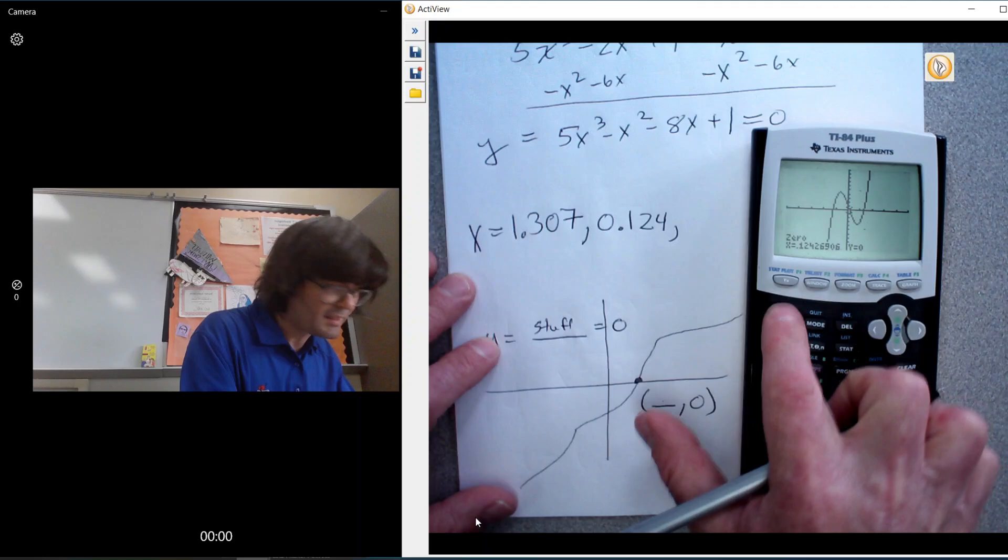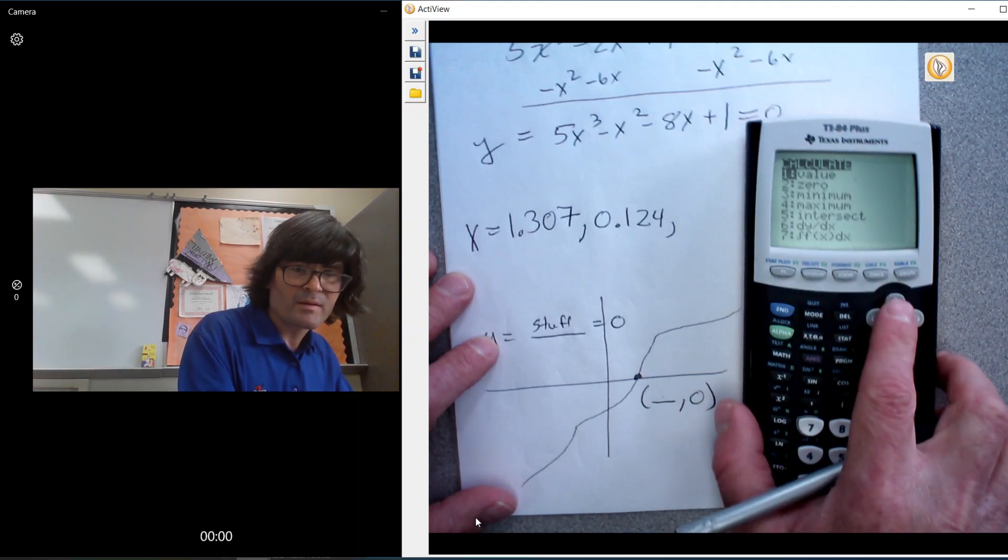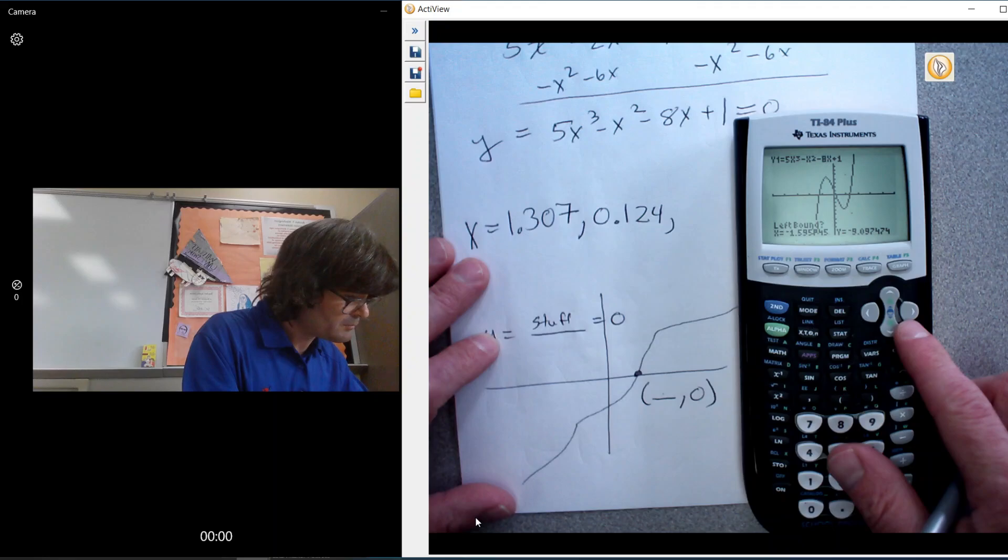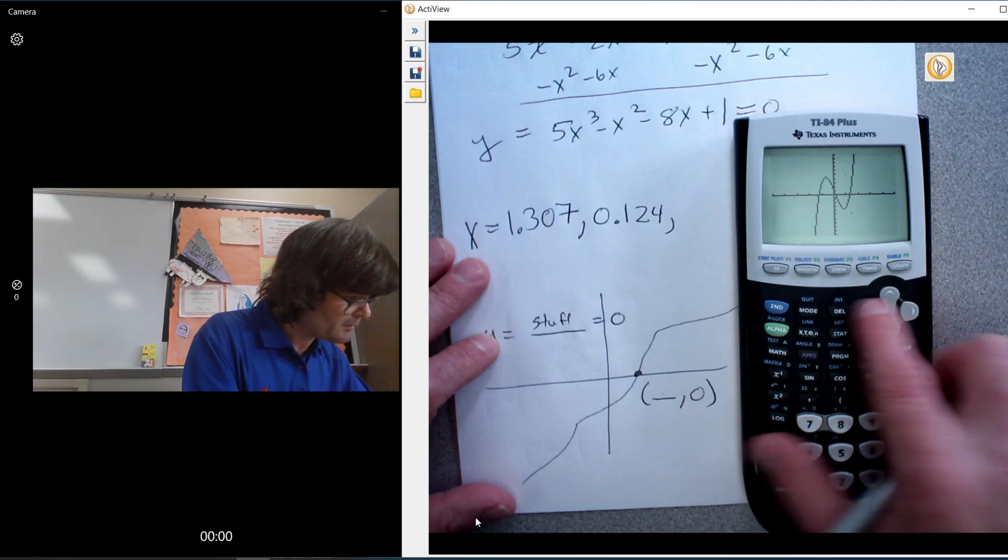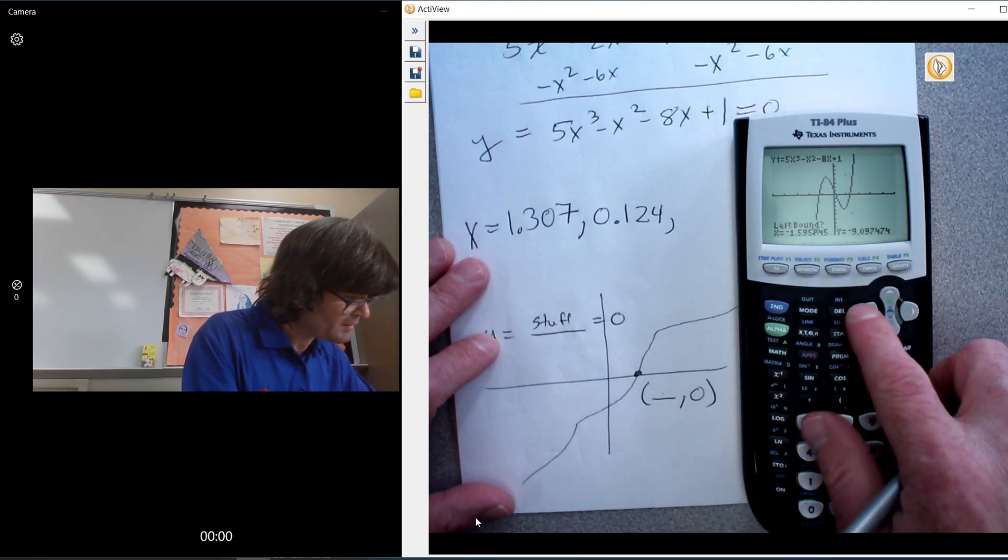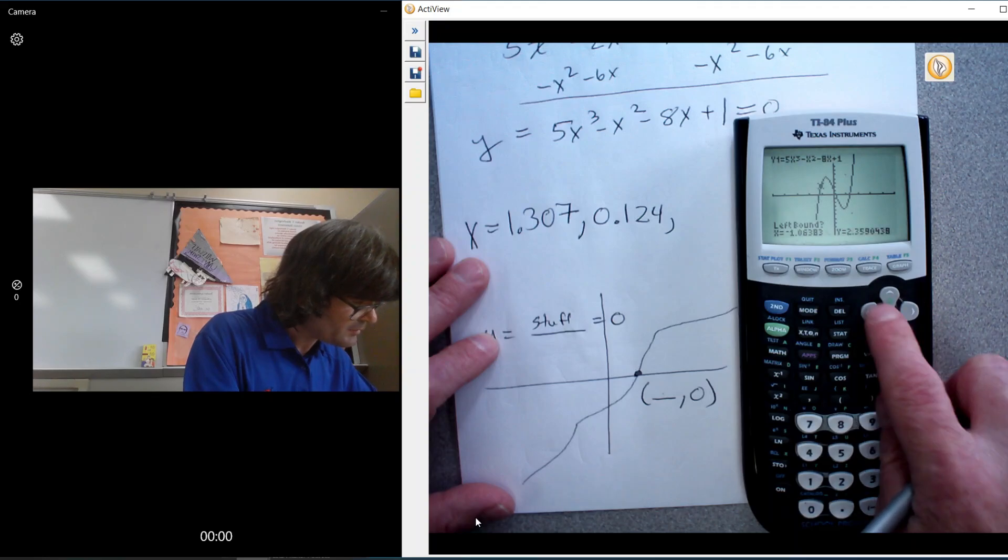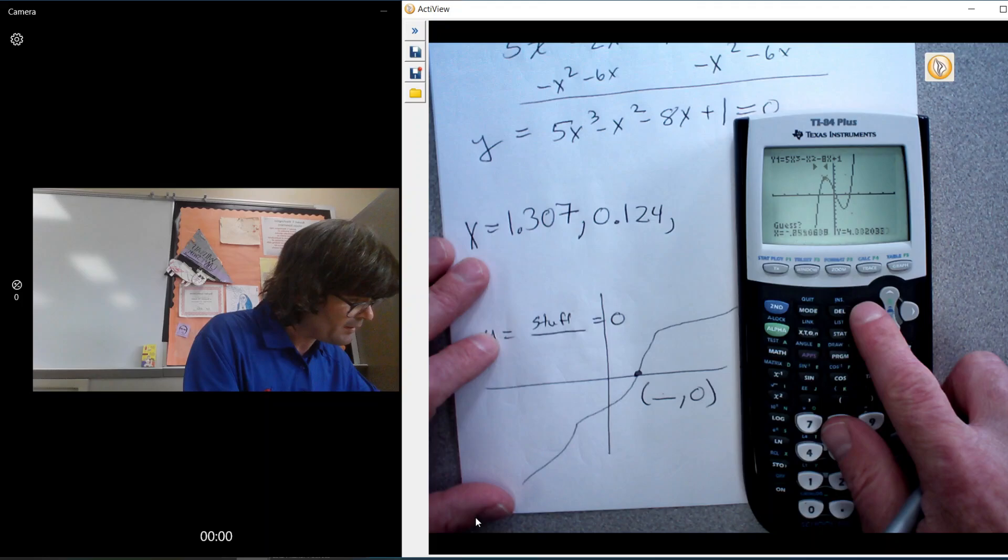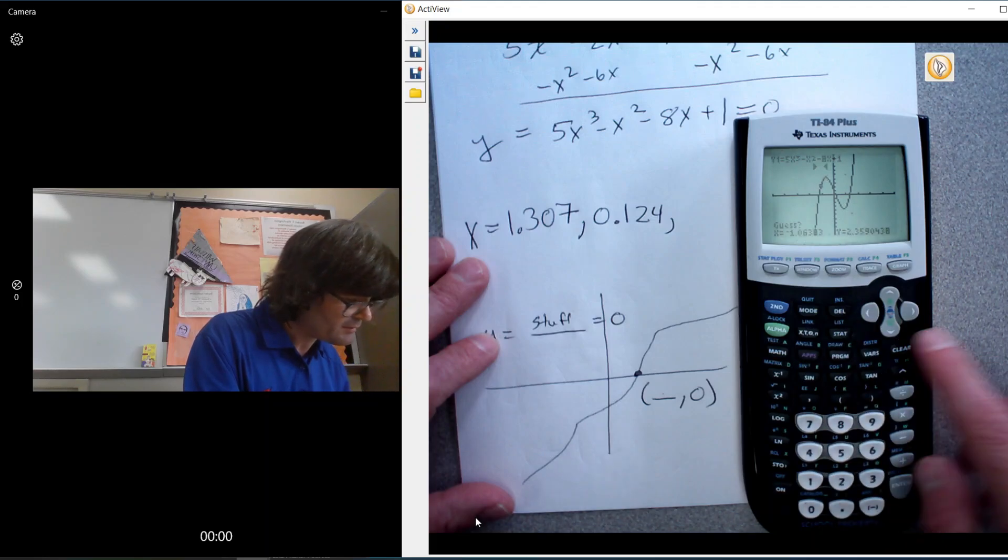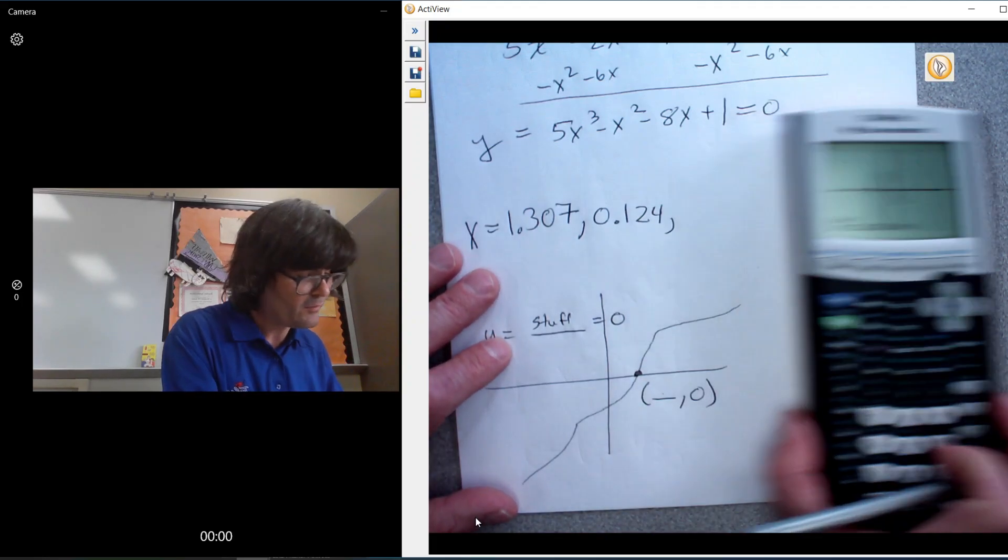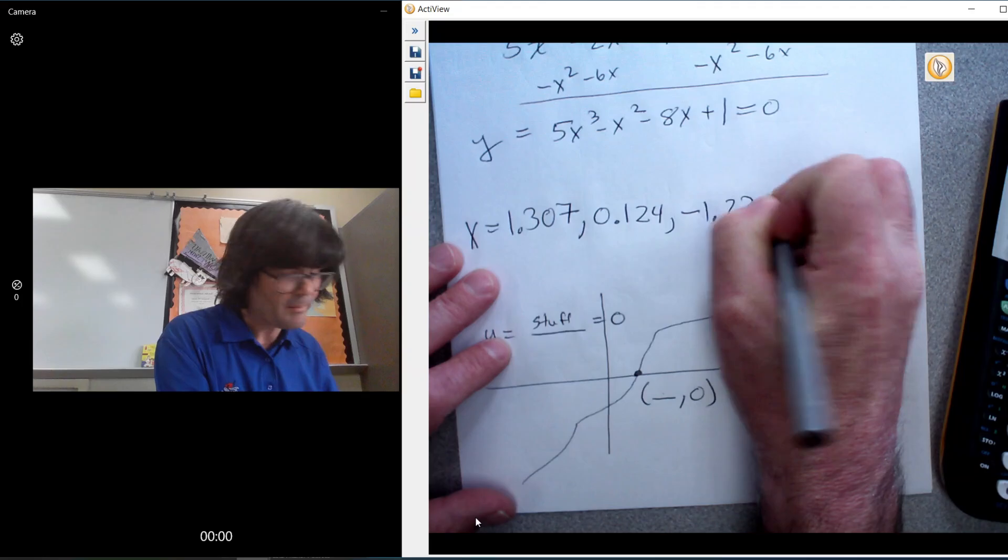And then try that one. Second calc, find a zero. There's my cursor. Left bound there. Right bound there. And guess. Good enough. And then negative 1.231. I'll call that negative 1.231.